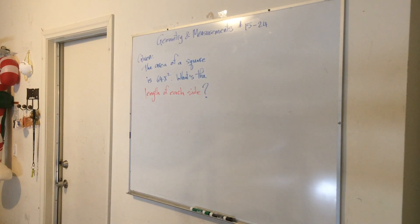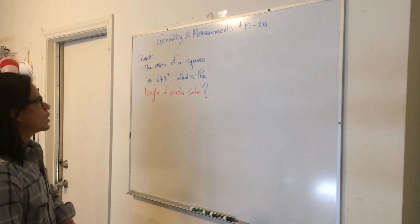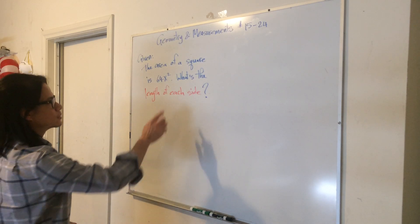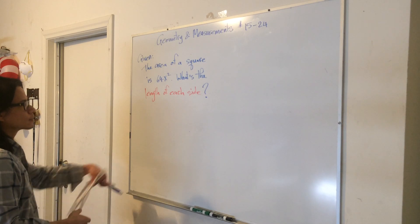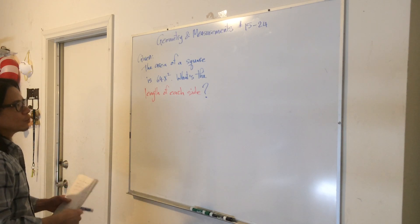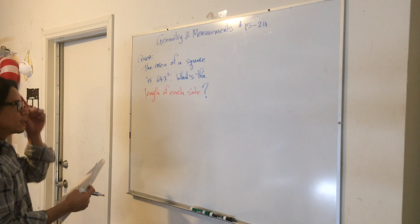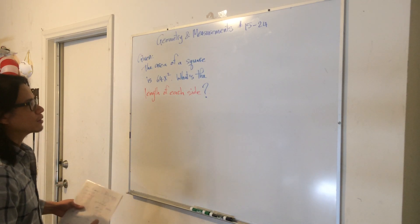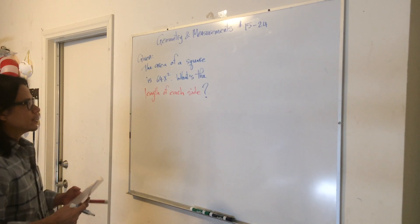This question says the area of a square is 64x squared. What is the length of each side of the square? Push pause on this video and see if you can draw it out and try to figure out the length of each side.